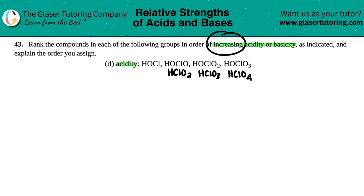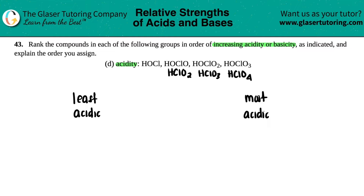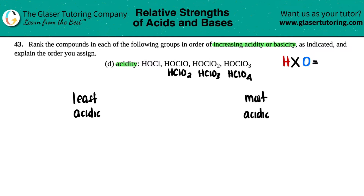They want this from increasing acidity, which means I have to start with the least acidic and work my way to the most acidic. For each one of them I see a hydrogen and an oxygen — it doesn't matter whether the oxygens are in the middle or the back — and then a random central element, in this case chlorine. These are oxoacids.